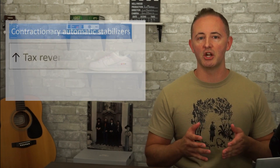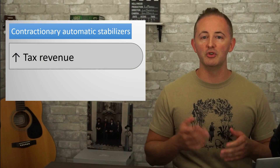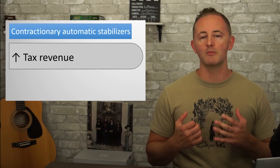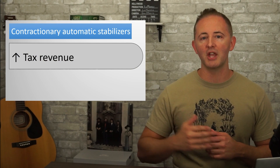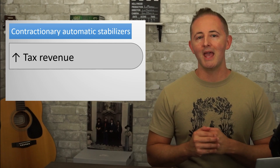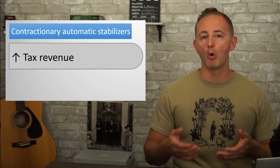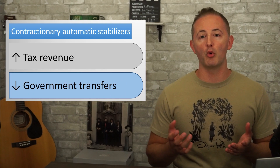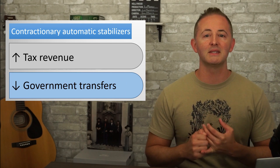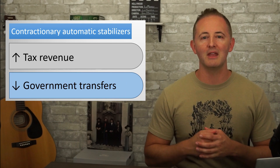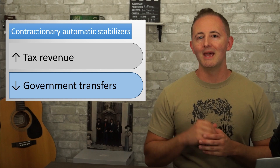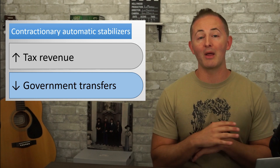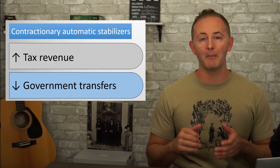When the economy is facing inflationary pressures, automatic stabilizers are contractionary. For one thing, tax revenues increase automatically as people bump up into higher tax brackets, and as more people are employed, more income tax revenue is collected. Additionally, fewer people qualify for unemployment benefits, Medicaid, welfare, and food stamps. Again, all of this happens without any action by policymakers.